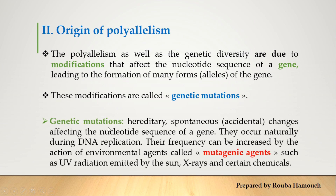As a definition, genetic mutations are hereditary — inherited from our parents — and spontaneous, meaning they occur by accident. They are changes affecting the nucleotide sequence of a gene and occur naturally during DNA replication. Note that sometimes our environment can affect our genotype. Some environmental agents called mutagenic agents, such as UV rays, X-rays, and certain chemicals, may lead to mutations in the gene and thus affect our phenotype. But most mutations are inherited from our parents.